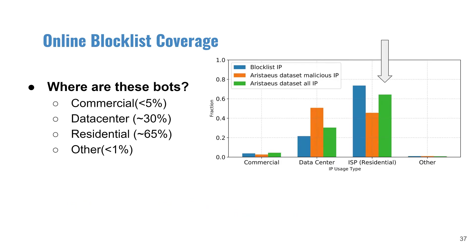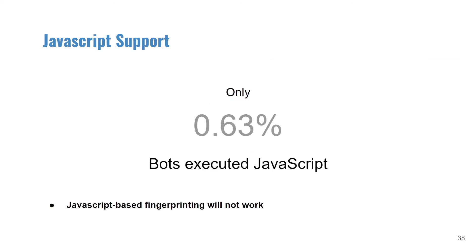To better understand the nature of these bots, we used the IP2Location database to obtain the type and location of all IP addresses. Contrary to our expectation that bots would be in data centers, a large portion of bots are actually located in residential IP space. Regarding JavaScript execution, we found only 0.63% of bots actually executed the JavaScript we provided, showing the limitation of JavaScript-based fingerprinting techniques which rely on client capabilities.